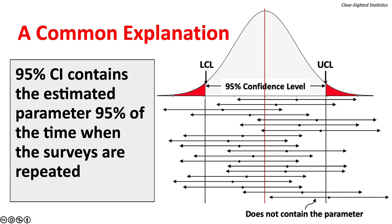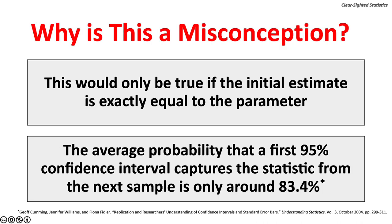A common explanation of confidence intervals is that a 95% confidence interval contains the estimated parameter 95% of the time when surveys are repeated. This, however, is a misconception. According to Jeff Cumming, Jennifer Williams, and Fiona Feidler, this would only be true if the initial estimate is exactly equal to the parameter. These statisticians argue that the average probability that the first 95% confidence interval captures the statistic from the next sample is only 83.4%.